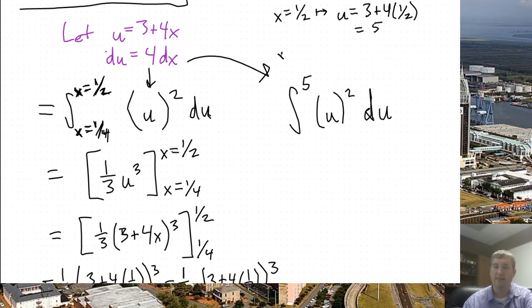And then my x is equal to 1/4. That'll be converted similarly. 3 plus 4 times 1/4. That's 3 plus 1 is 4. So I'll put a 4 on the bottom. And then I can just take the integral. u squared becomes 1/3 u cubed.